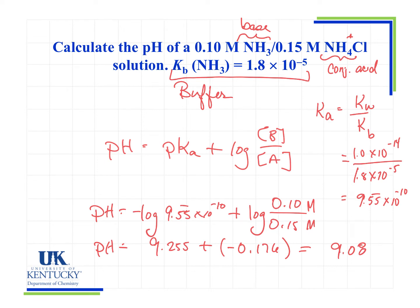A pH of 9.255 is basic, and typically if you're making a buffer from a base and its conjugate acid, it's going to have a pH in the basic range. The 9.255 would be the pH if we had equal amounts of both components, since the log of 1 equals 0. The second term fine-tunes it up or down. In this case it fine-tunes it down, which makes sense because we have more acid than base, so we'd expect the pH to come down a little — giving us 9.08.